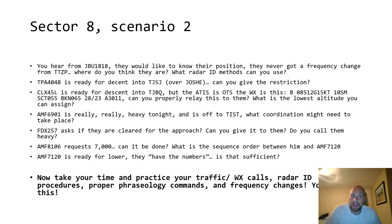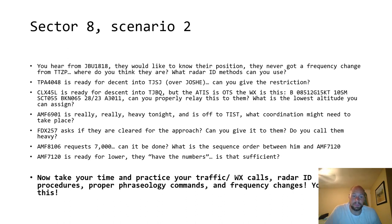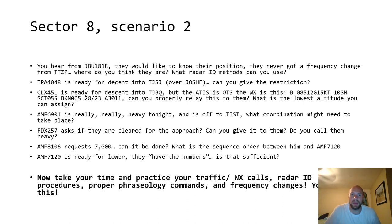Welcome back. Sector 8, Scenario 2. You hear from JetBlue 1818 — they would like to know their position, they never got a frequency change from PRCO. Where do you think they are? What radar ID methods can you use? We might have had a Mode C intruder in that scenario — that could be the culprit. Tampa 4048 is ready for descent to San Juan over Joshy — can you give them that restriction? Cargolux 45 Lima is ready for descent to Brinkin, but the ATIS is out of service and the weather is Bravo: wind 085 at 12 gusts 15, visibility 10. Can you relay the weather to them? What is the lowest altitude you can assign? Give them the weather and give them an altitude. And that Blas 6901 — he is really heavy tonight. Don't call him heavy though, you know what I mean?